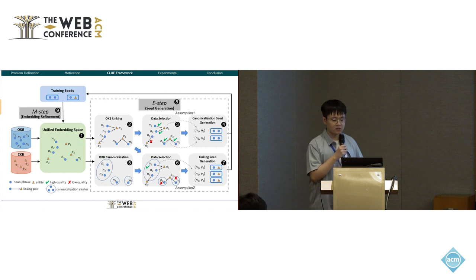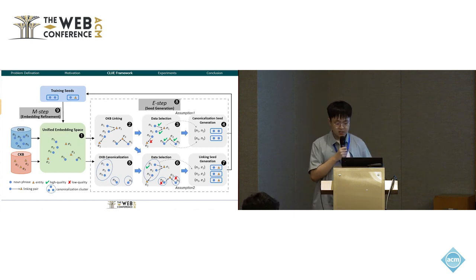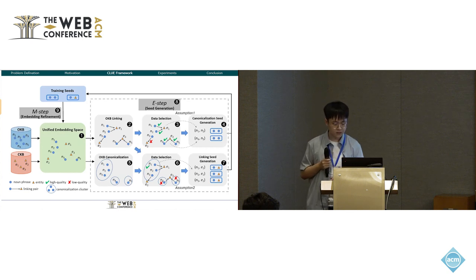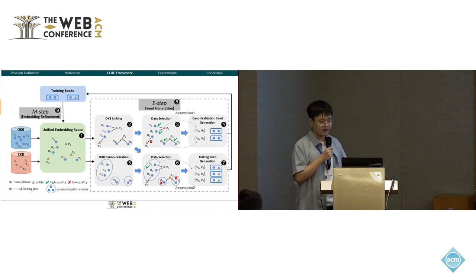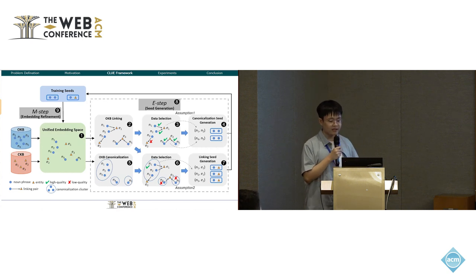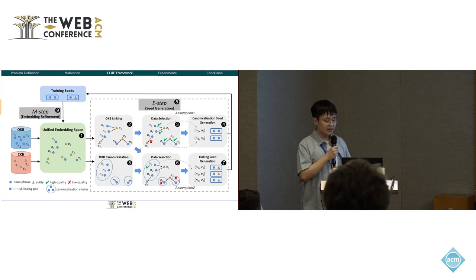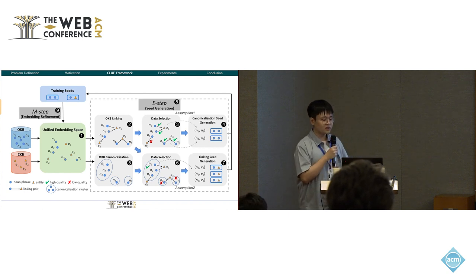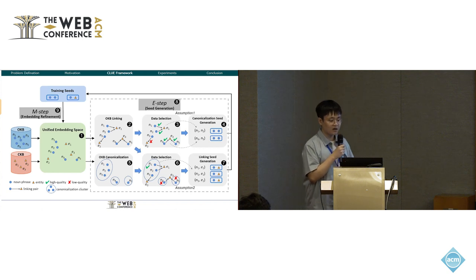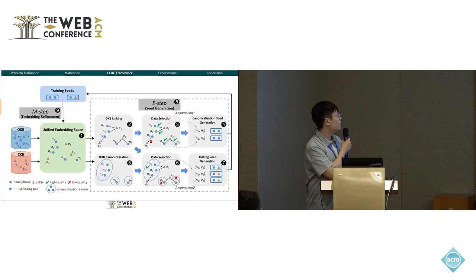Based on the two assumptions, we propose a new framework named CLUE to tackle OKB canonicalization and OKB linking simultaneously and enable these two tasks to benefit each other. As shown in step one, we jointly encode the OKB and the CKB into a unified embedding space with multi-task learning. Then, to further improve the performance of both tasks, we propose an EM-based algorithm to iteratively refine the unified embedding space. In the E-step, we perform OKB linking and OKB canonicalization based on the unified embedding space as shown in steps two and five. Based on the results, OKB canonicalization and OKB linking can generate high-quality training seeds for each other based on our two proposed assumptions. Finally, these newly generated seeds are leveraged in the M-step, step nine, to further refine the unified embedding space.